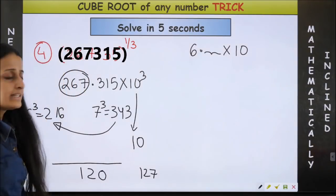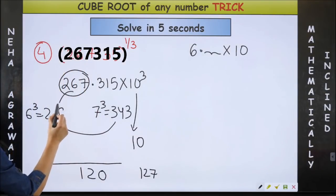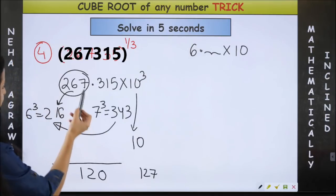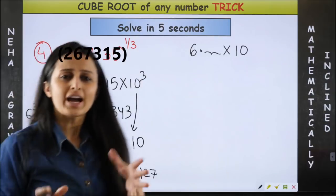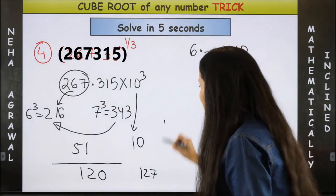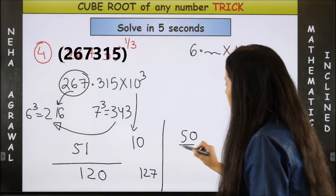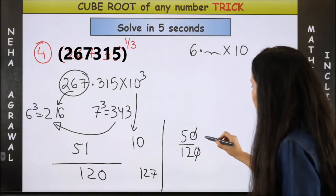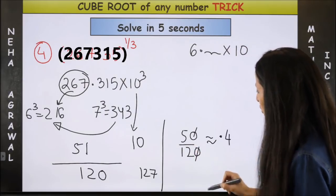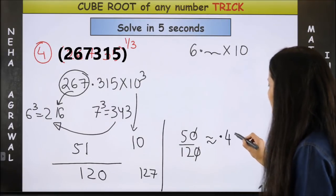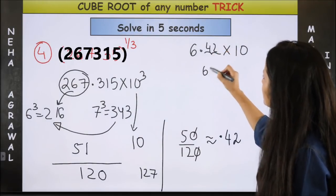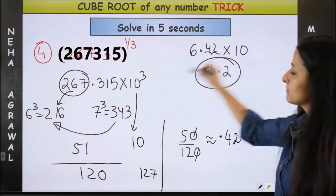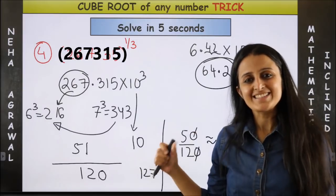Now 267 minus 217, which is of course going to give us 51. So that means roughly I can take this to be 50 upon 120. So this is going to be 0.4, and so roughly 0.42. So I am going to get this to be 64.2. Bingo, the answer is done.